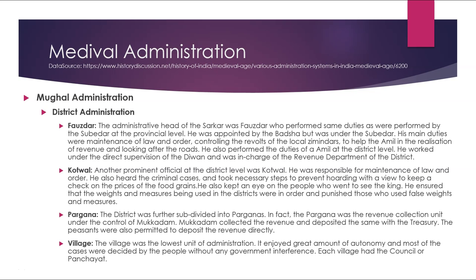At the district level, the administrative head of the Sarkar was a Fojdar who performed duties similar to those of the Subedar at the provincial level. He was appointed by the Badshah but worked under the Subedar. His main duties were maintenance of law and order, controlling revolts of local zamindars, helping the Amil in realization of revenue, and looking after roads. Another prominent official at the district level was the Kotwal, responsible for maintenance of law and order. He heard criminal cases, prevented hoarding to keep food grain prices in check, kept an eye on visitors to the king, and ensured correct weights and measures were used, punishing those who used false ones.